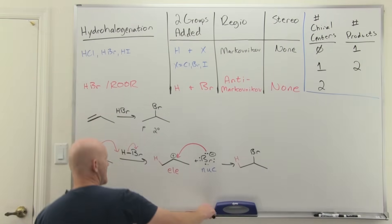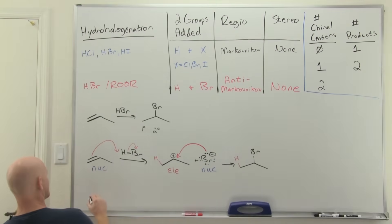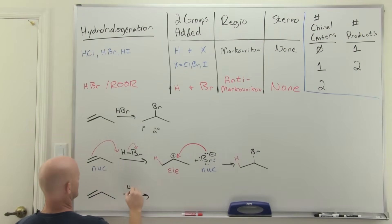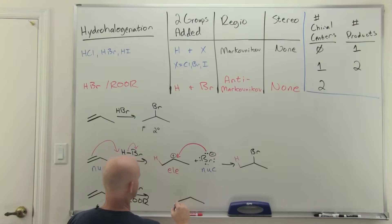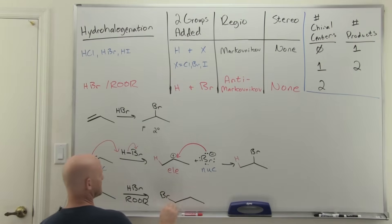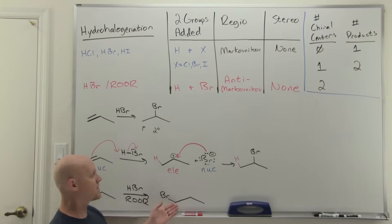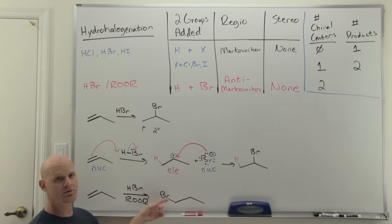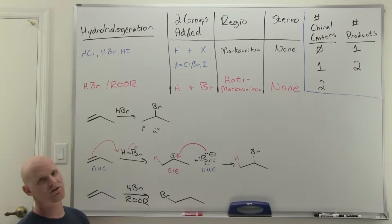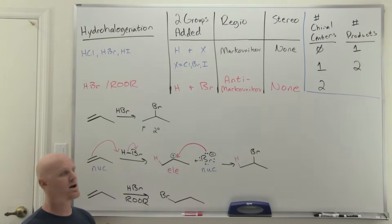Predicting the product of the same alkene with HBr and peroxide: now the bromine ends up on the less substituted carbon and the hydrogen on the more substituted carbon. Neither of the carbons that became sp³ hybridized are chiral centers — neither has four different groups — so we get just the one achiral product.